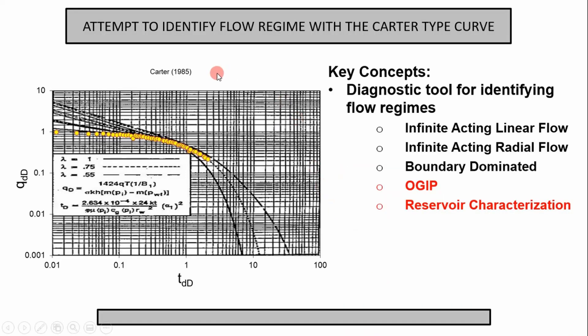Today we're going to use the Carter type curve to try to identify the flow regime our gas production well is experiencing. So we've done our rate time, rate queue, linear flow, and radial flow interpretations, but we don't know which one is correct. Well, a Carter type curve is a diagnostic tool for identifying the flow regime, and although it won't get it right all the time, if your data is clean, sometimes you can get a good interpretation to gain confidence.